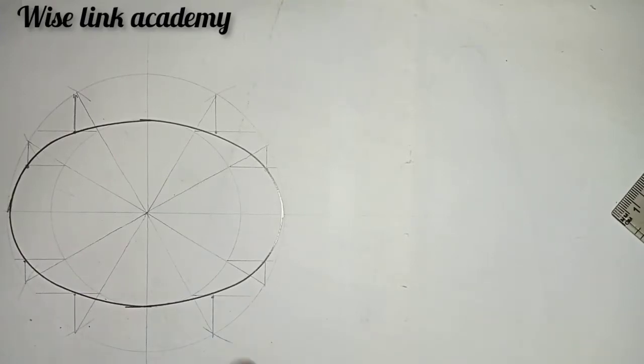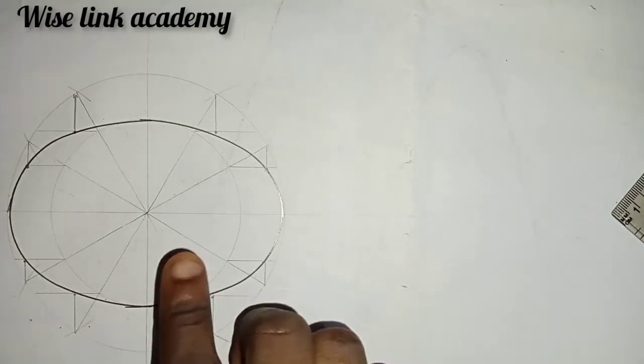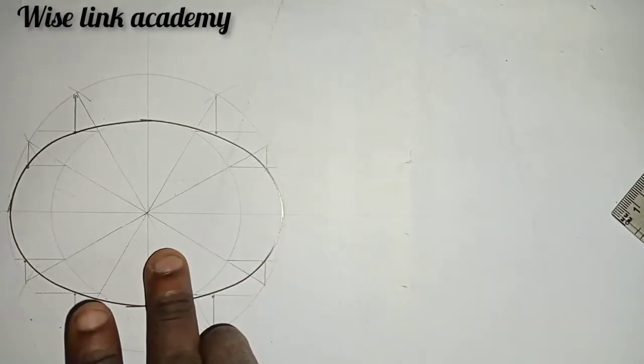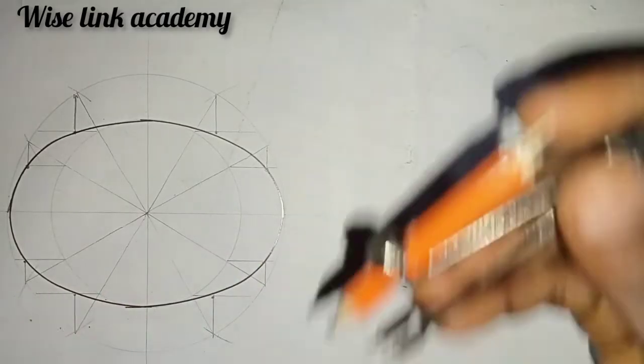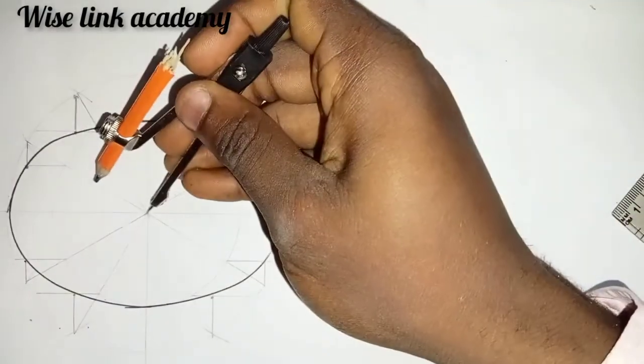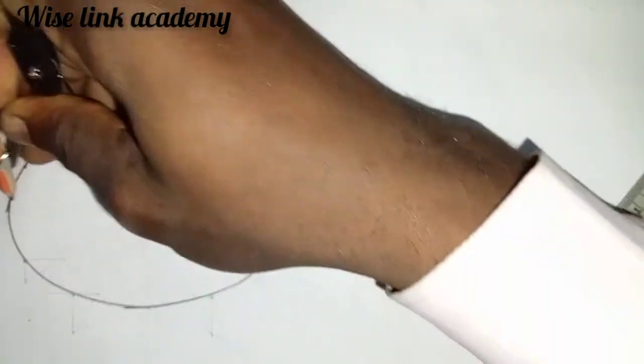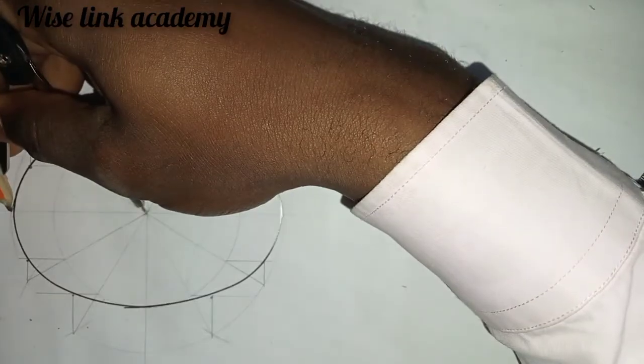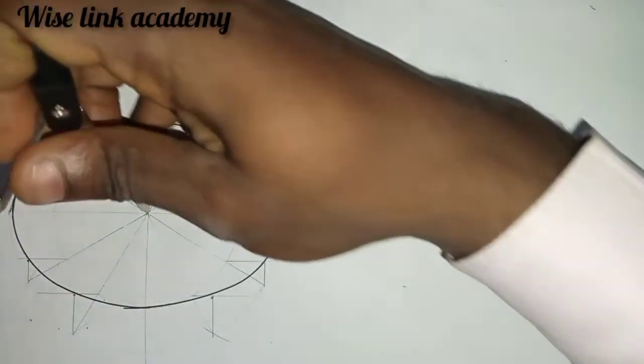If you are told to draw tangent and normal to your ellipse, you take a compass this way at the center of the ellipse to the edge of the circle, as you can see.